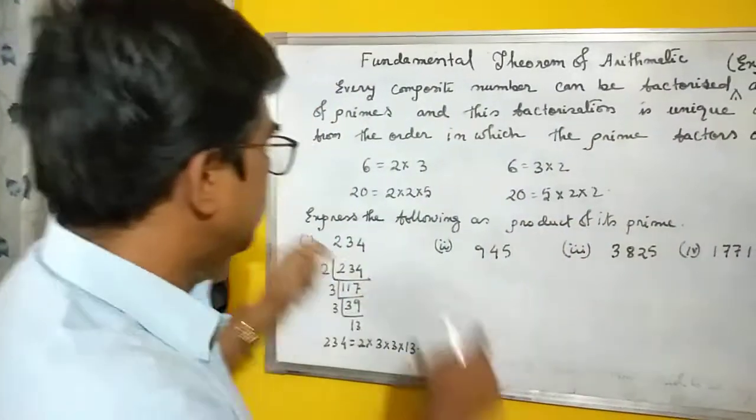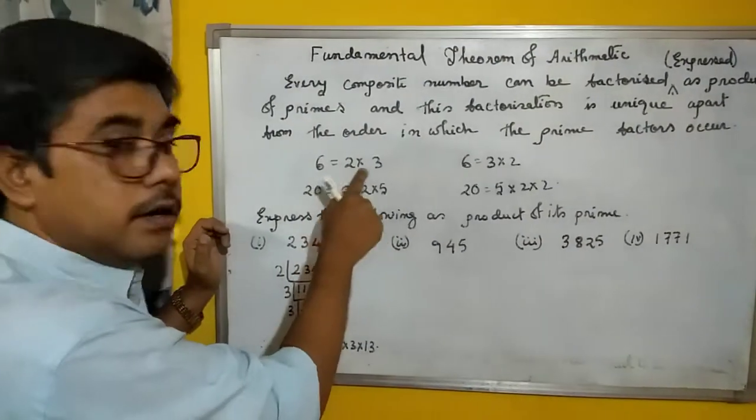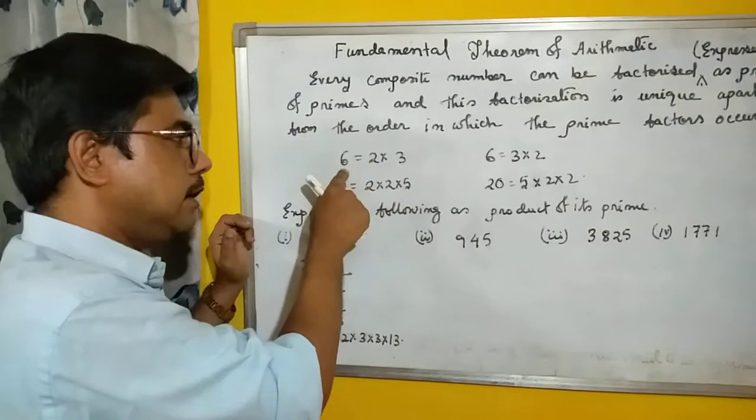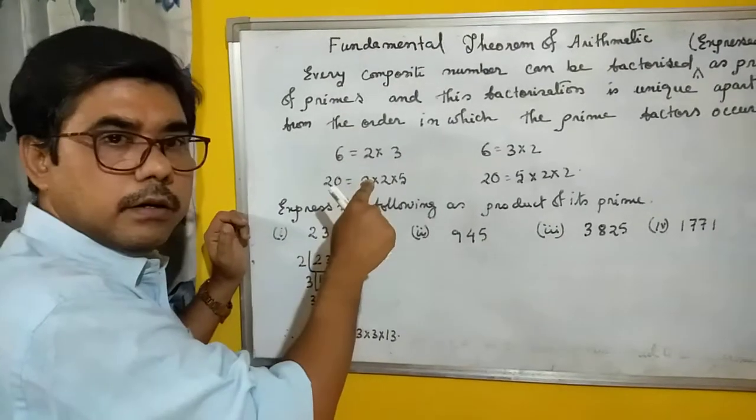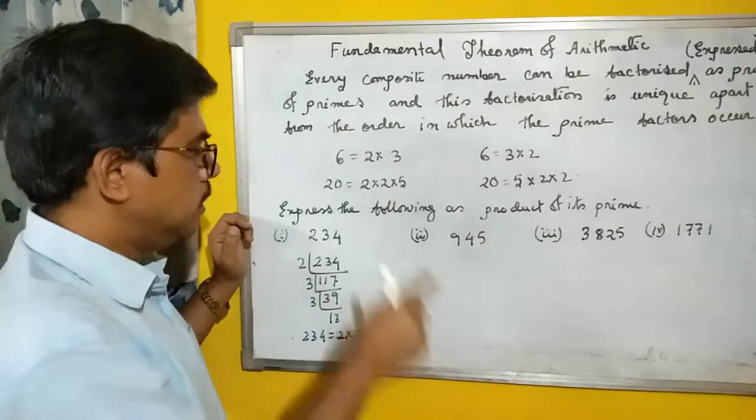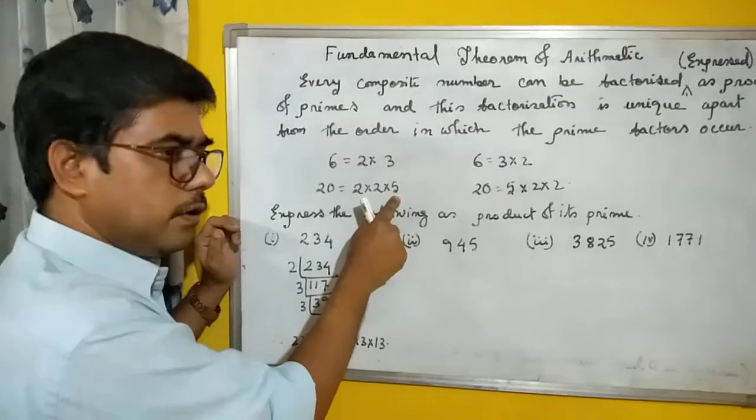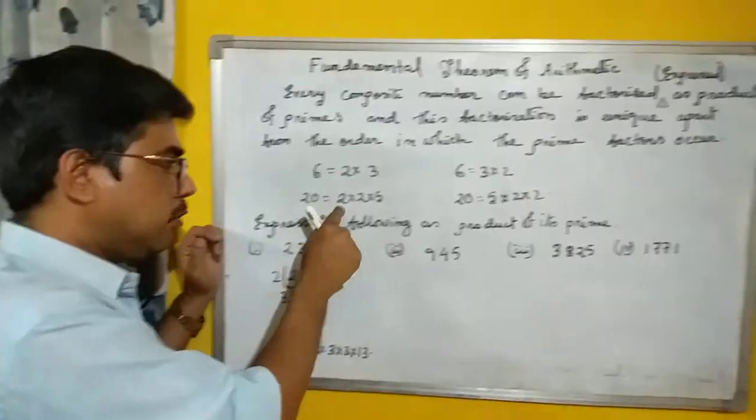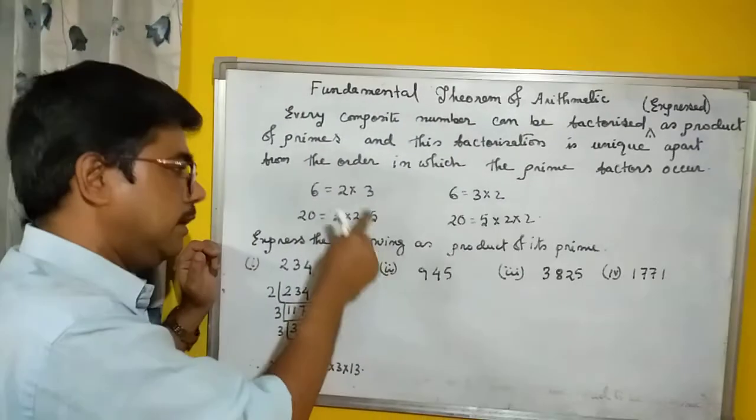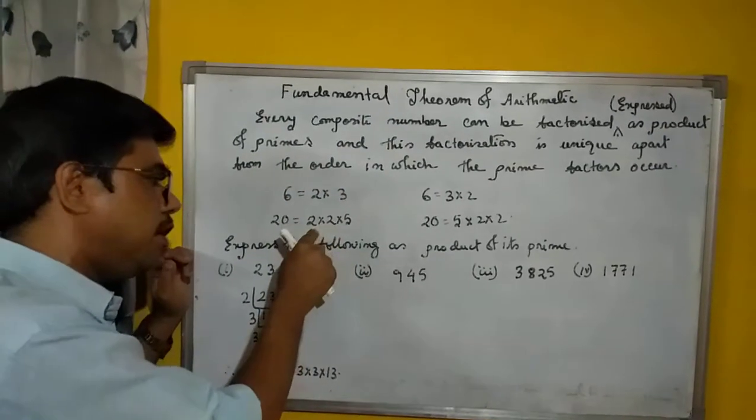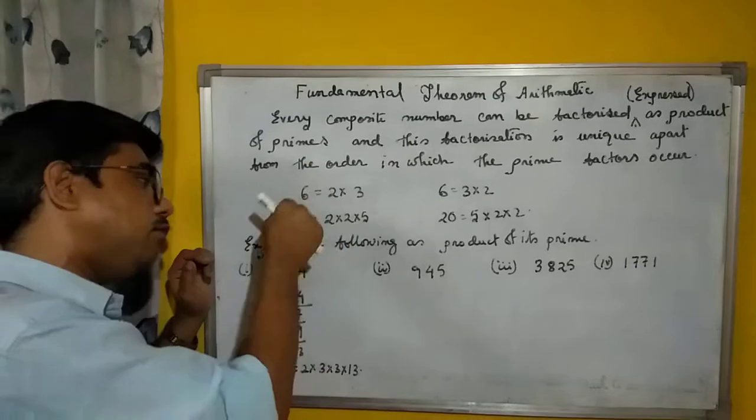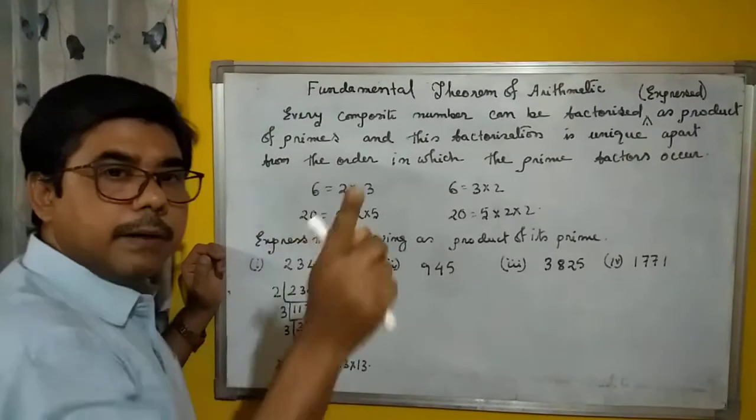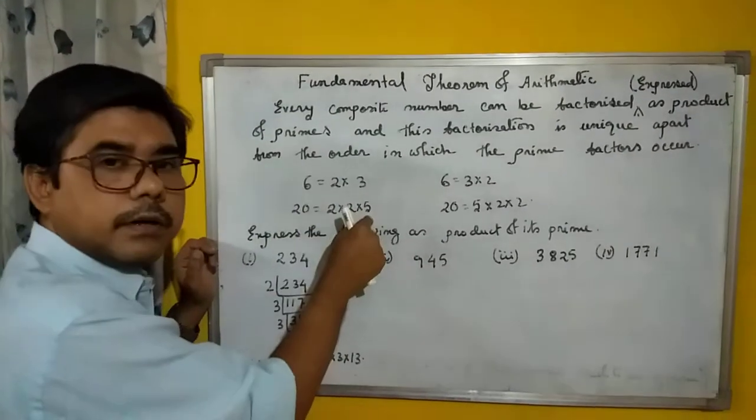The factorization is unique. Factorization unique means if we multiply 2 and 3, we will get 6 and no other number. That is unique. Similarly, 2×2×5 will give 20 only. That is unique.